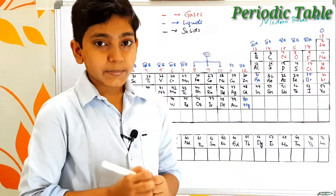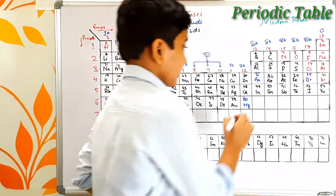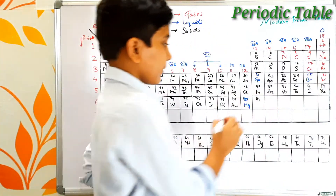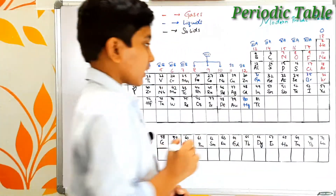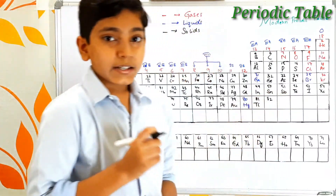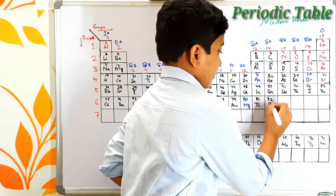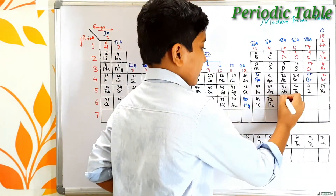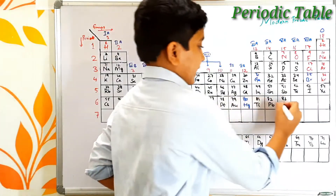Atomic number 81 is thallium — its symbol is Tl. Atomic number 82 is lead — its symbol is Pb, which comes from the Latin word plumbum. Atomic number 83 is bismuth — its symbol is Bi.